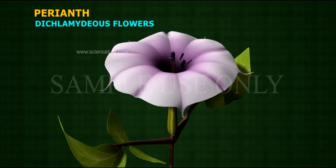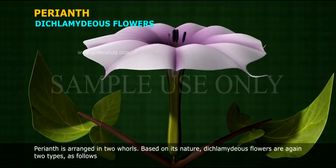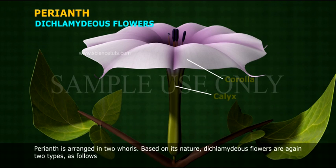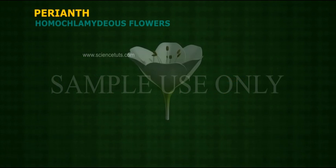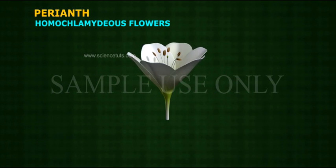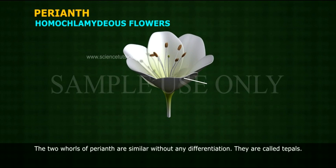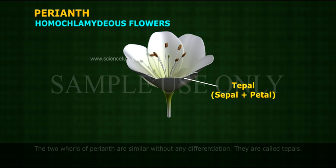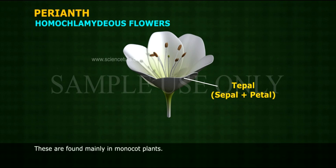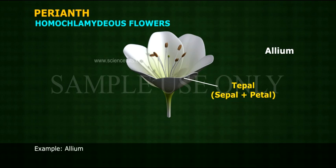Dichlamydeous flowers: Perianth is arranged in two whorls. Based on its nature, Dichlamydeous flowers are again of two types. First, Homochlamydeous flowers, where the two whorls of Perianth are similar and are called tepals. These are found mainly in monocot plants. Example: Allium.